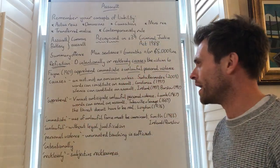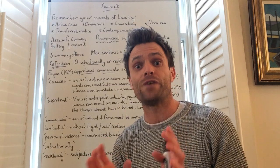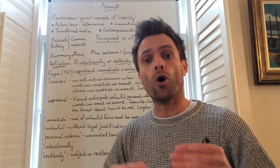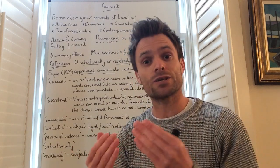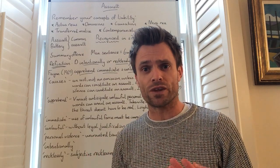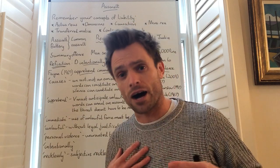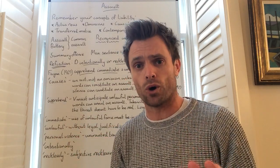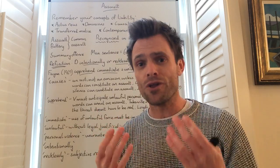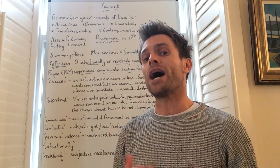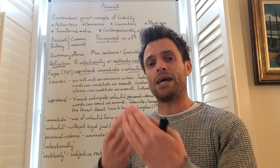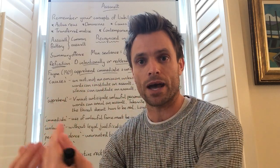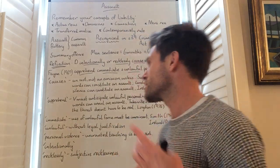Moving on to the next key word: 'apprehend'. I'm going to take issue with the word 'fear' that I've used a few times. The victim doesn't actually have to fear immediate unlawful personal violence against them or indeed be scared - they just have to anticipate it, to expect it. That's what the word 'apprehend' means. For example, if I'm five foot five and I threaten someone who's six foot six, they are not going to be that scared of me. But should that excuse me for the offence of assault? Absolutely not. The victim, even if they are six foot six, is still going to predict, apprehend, expect unlawful personal violence from me. They may not fear it, but they don't have to fear it - I would still be liable for the offence.